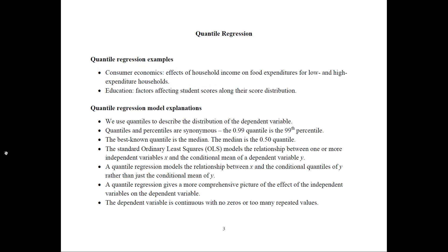Here are a couple examples to get us started. From consumer economics, we can study the effects of household income on food expenditures, and you can do this with a normal regression. However, you would not know if that effect is different for those people that have low food expenditures and those that have high food expenditures. If you would like to know if that effect differs along the distribution of the food expenditures, you need to use a quantile regression.